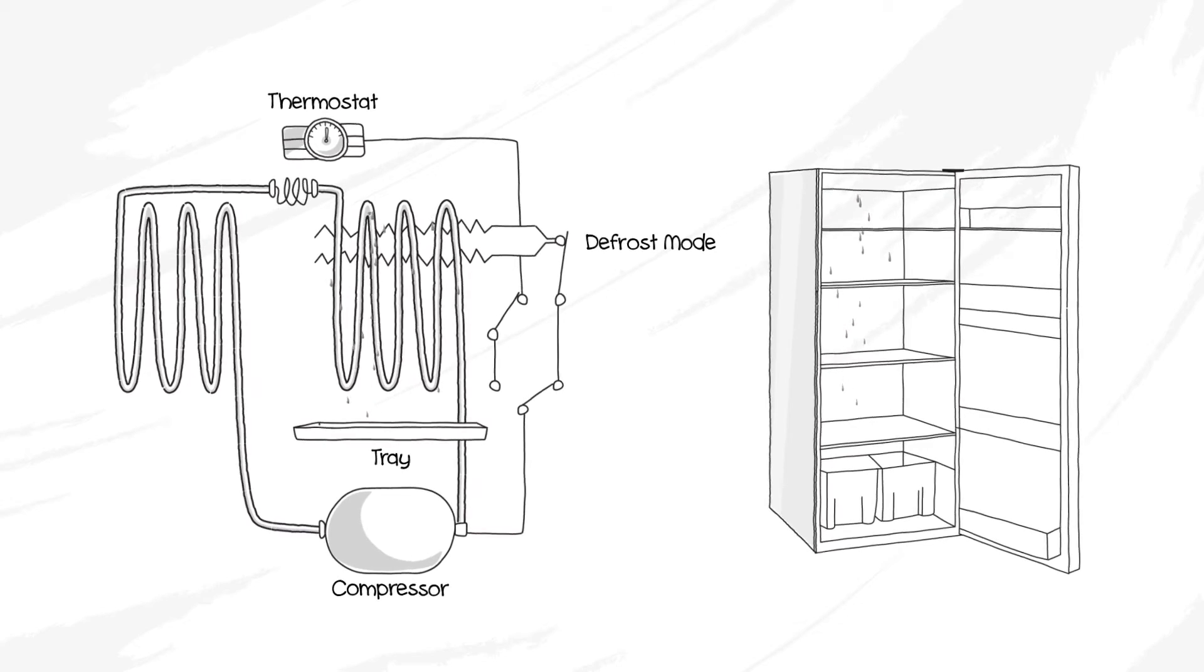The frost will slowly start to melt and trickle down the back wall to a drain at the bottom. Once defrosted, the water gets channeled to a hidden tray above the compressor where it evaporates automatically.